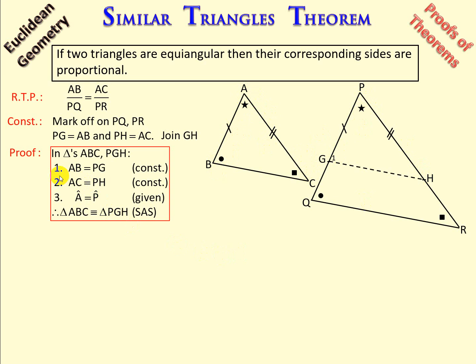Looking at the proof, number one, AB is equal to PG, construction. Number two, AC is equal to PH, construction.